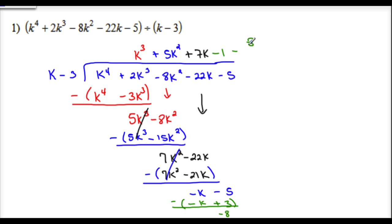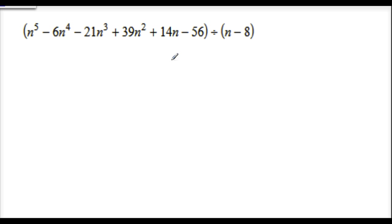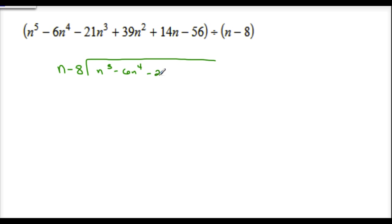So then it's minus 8 over k minus 3. Your remainder is going to go over the k minus 3, just like you did in regular division. The next example is going to have five terms: n minus 8 going into n to the 5th minus 6n to the 4th minus 21n cubed plus 39n squared plus 14n minus 56.